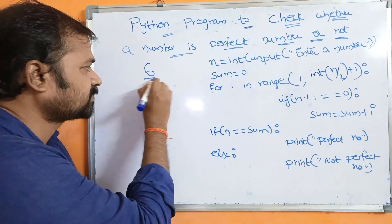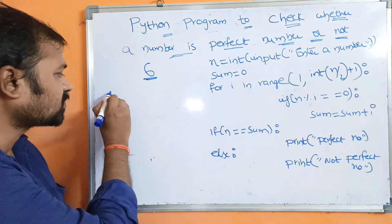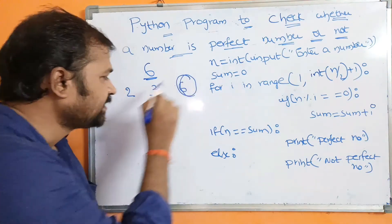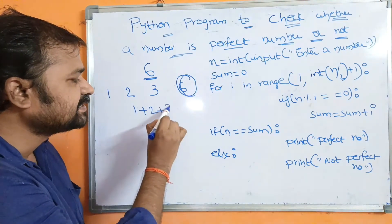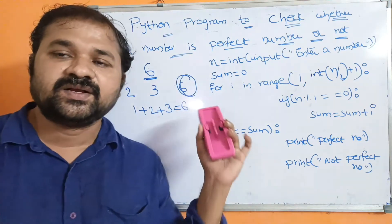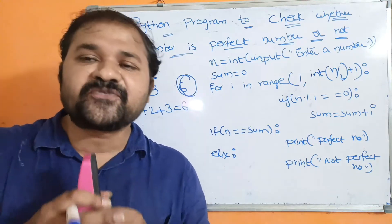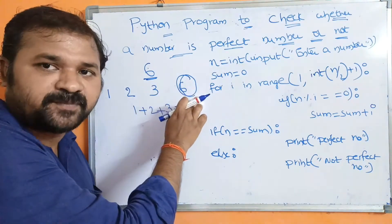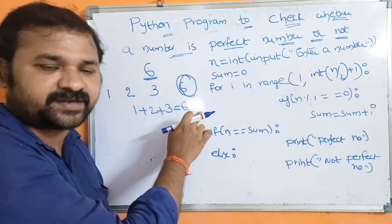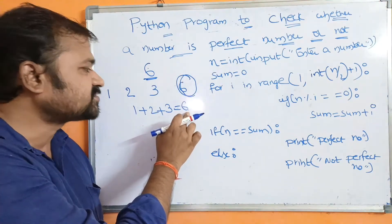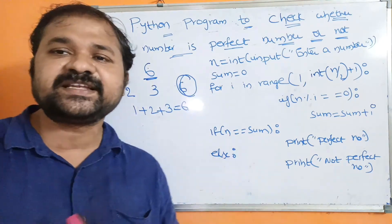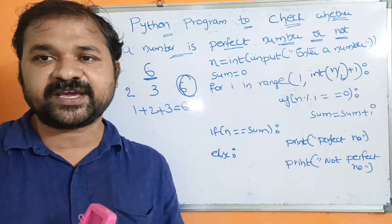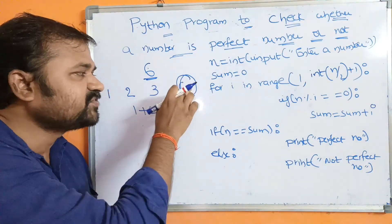6 is a perfect number. The factors for 6 are 1, 2, 3, 6 — but we should not consider that number itself. If we add 1, 2, 3 the result is 6, which is the given number. So a perfect number means the sum of factors of a number, excluding the number itself, is equal to the given number.